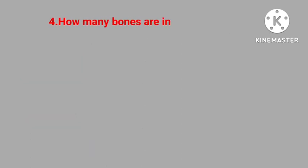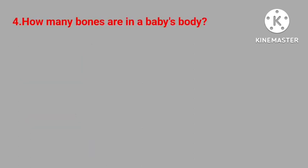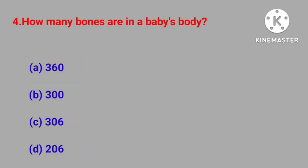Question number four: how many bones are in a baby's body? 360, 300, 306, 206. Correct answer is 300.